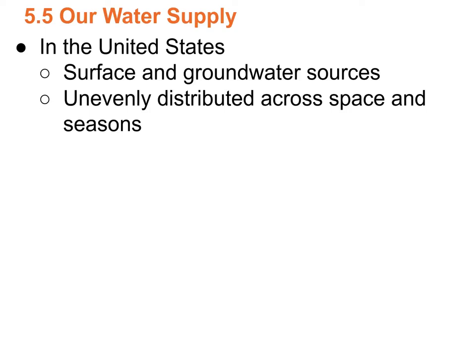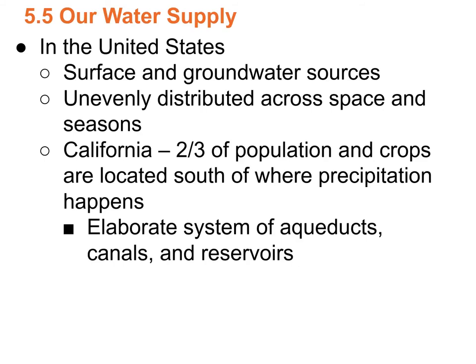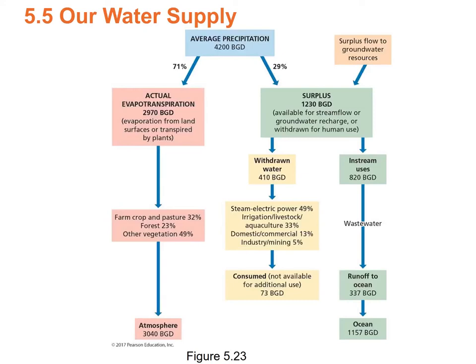California's water is out of whack in terms of space too — two-thirds of the people live south of where most of the rain falls. Northern California gets most of the rain but has few people; Southern California gets very little rain but has a lot of people. So there's an elaborate system of aqueducts, canals, and reservoirs to transfer water from Northern to Southern California.